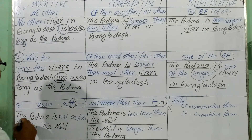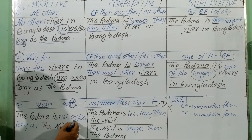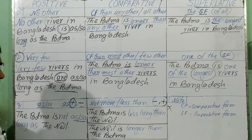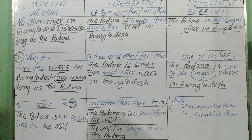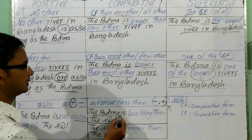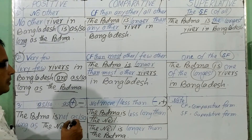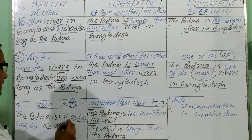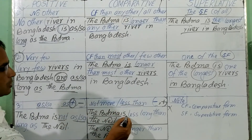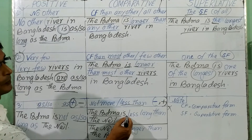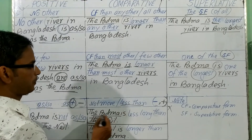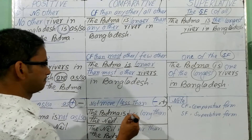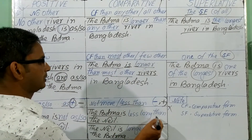In rule three, 'The Padma is not as — or so — long as' another river. You can write: 'The Padma is less...' Because this is a negative sentence, for this reason we will have to omit 'not.' The Padma is less long than — meaning 'the Padma is less long than' the other river.